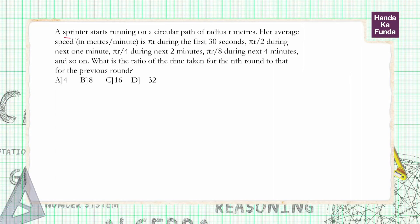In this question, we are given a sprinter running on a circular path of radius r. That means he needs to cover a total of 2πr to cover one lap. Her average speed is πr during the first 30 seconds.